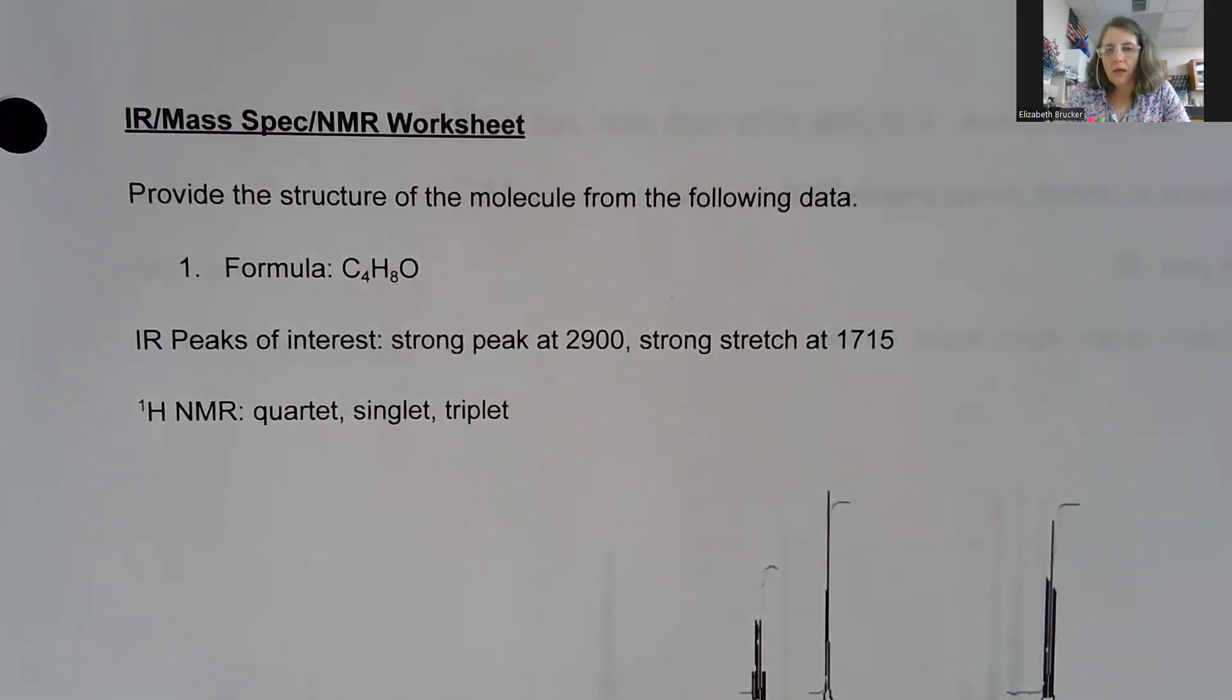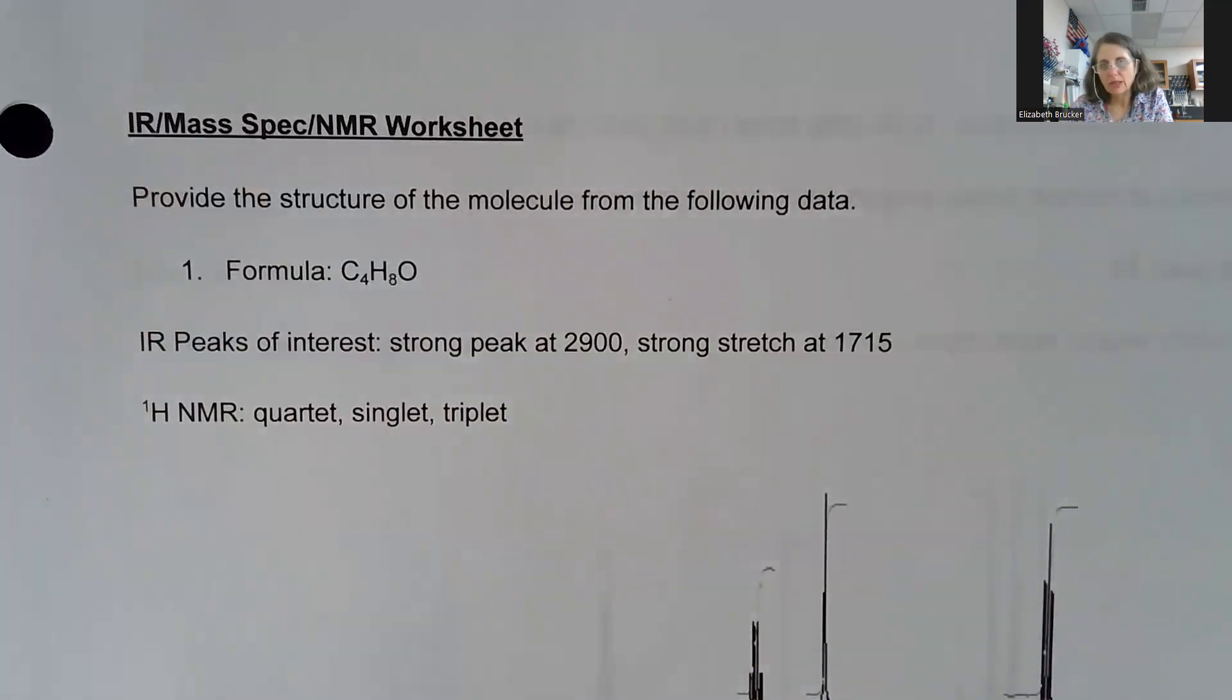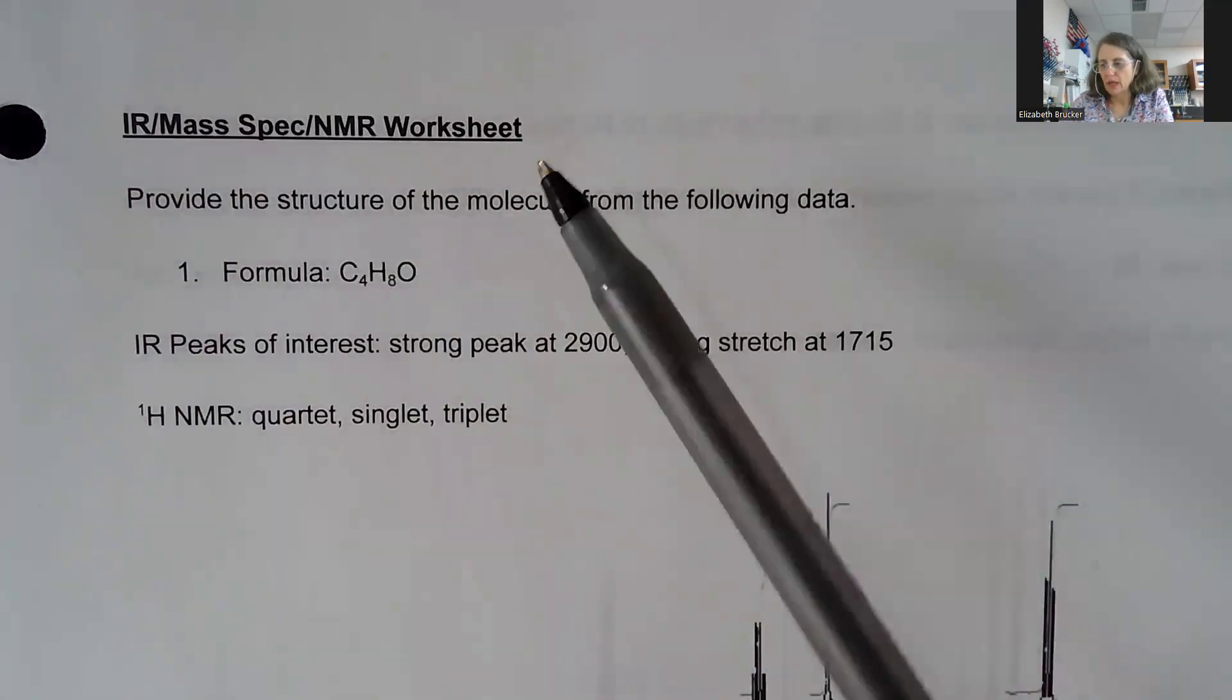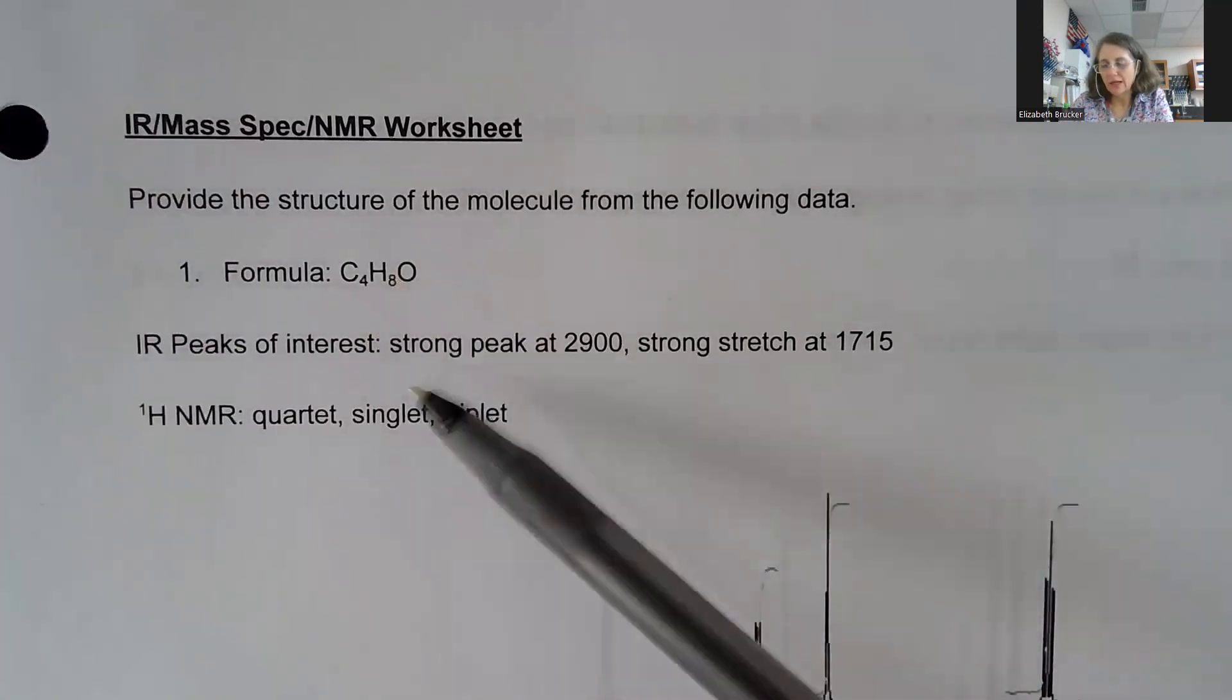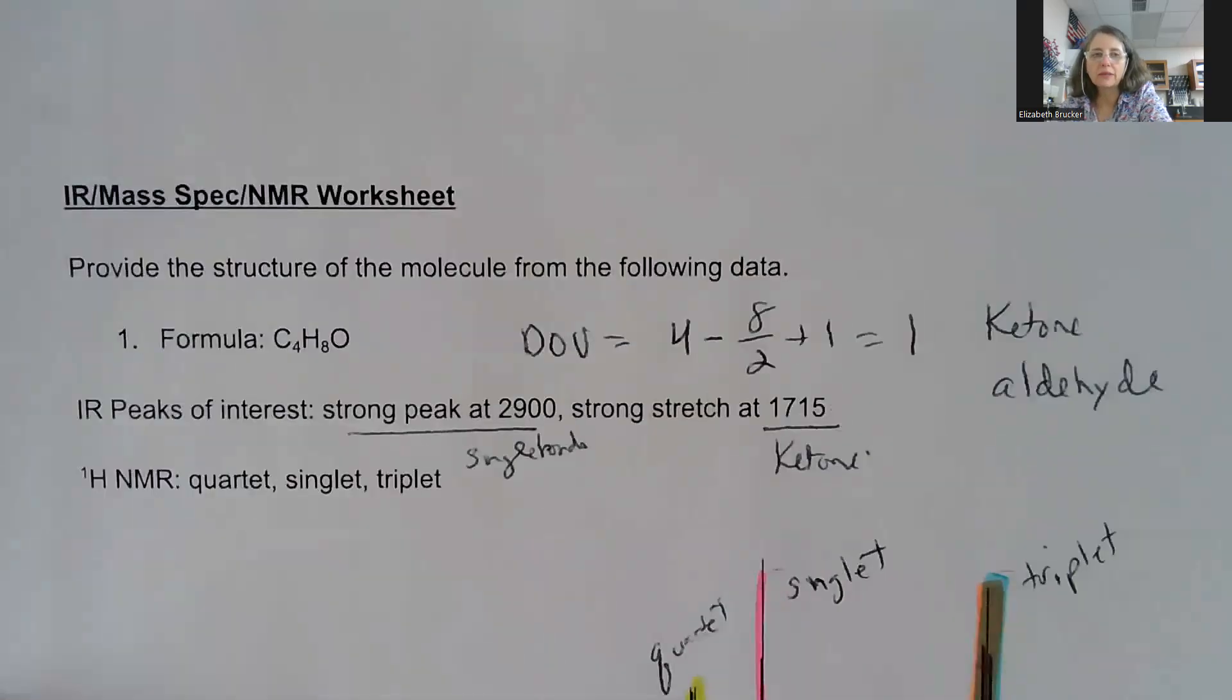So this is going to be me talking through the answer key to this worksheet, and I'm going to spend a little bit more time on one or two of them than others. It's a combination of the IR, the mass spec, and the NMR we have been learning. Depending upon what you're given in the problem, you have a formula, IR, NMR, and the NMR is going to be detailed for you.